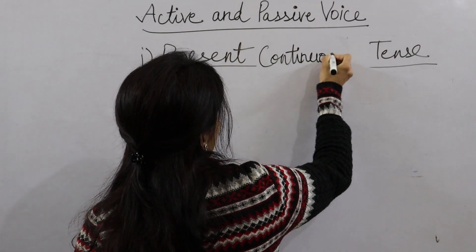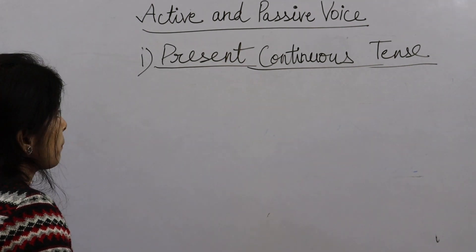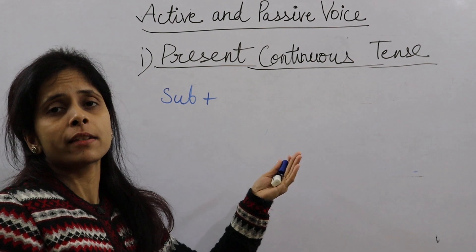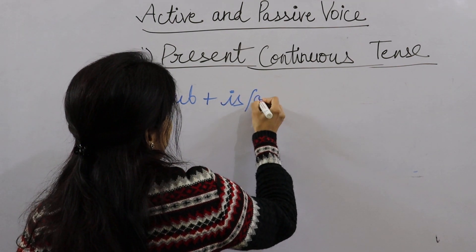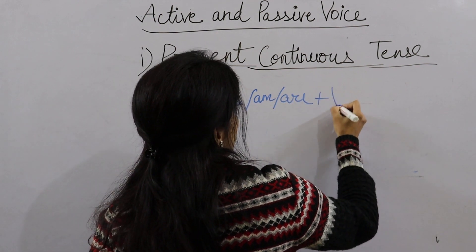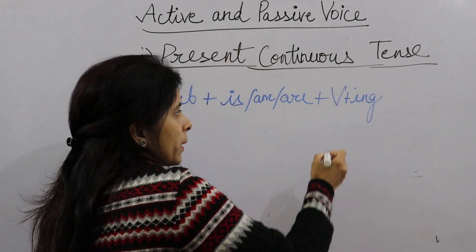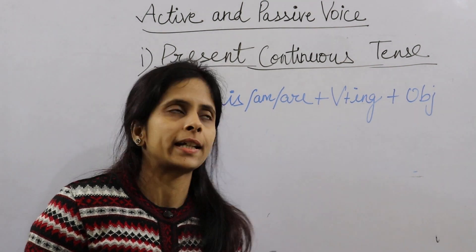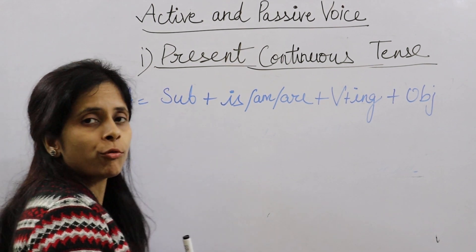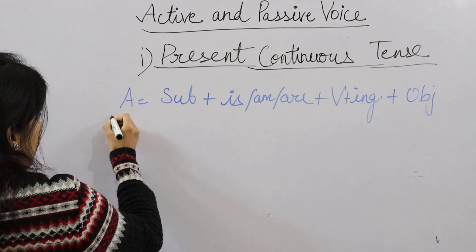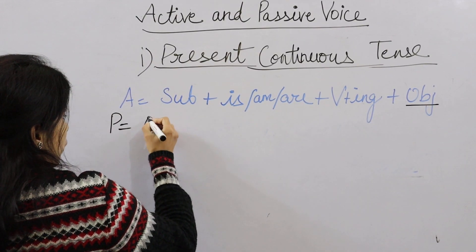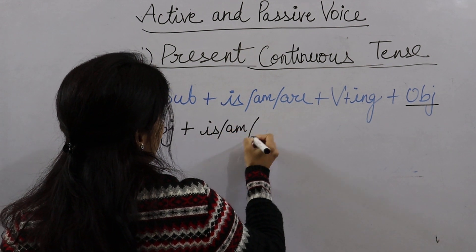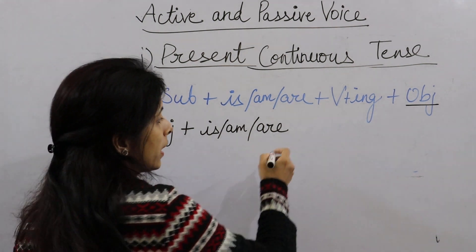Present Continuous Tense का formula देखते हैं। हमेशा याद रखिएगा: जब भी हम Passive Voice बनाते हैं, verb की हमेशा 3rd form होती है। Active Voice में formula होता है: Subject + Is/Am/Are + Verb की First Form के साथ Ing + Object। यह आपका Present Continuous Tense का Active Voice sentence है। Passive Voice बनाते हैं तो: Object + Is/Am/Are + Be + Verb third form + By + Subject।